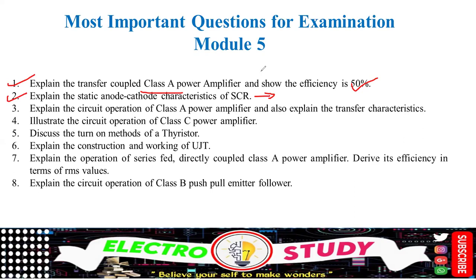During reverse biased condition, what is going to happen? During forward bias condition, what will happen? Then, whenever you are providing the gate current, how will the SCR turn on? Also, explain the circuit diagram of the Class A power amplifier and explain its transfer characteristics — you have to plot the graph.